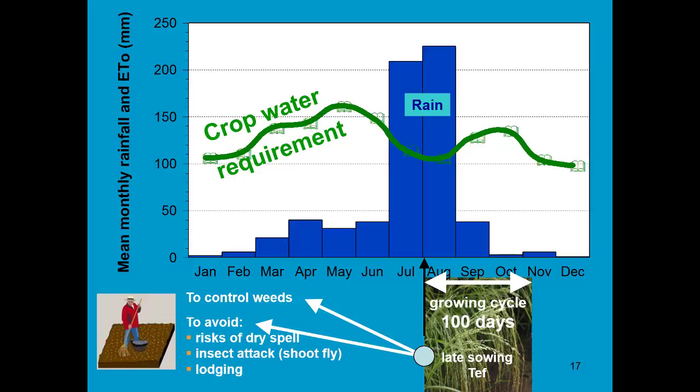There are other reasons why farmers sow tef rather late. These days the Ethiopian government is promoting the sowing of tef in rows. As such, weeding becomes much more easy and farmers can sow earlier.